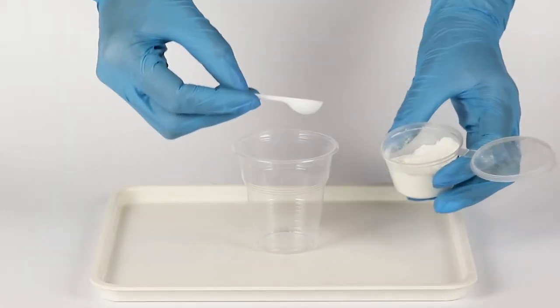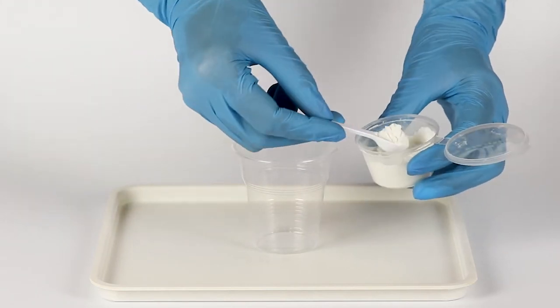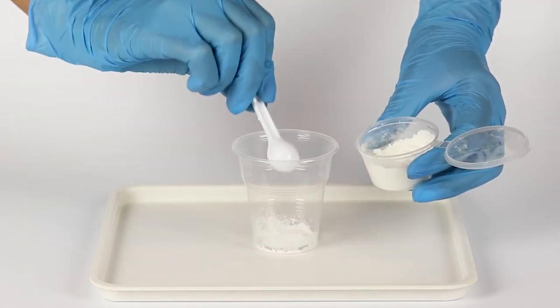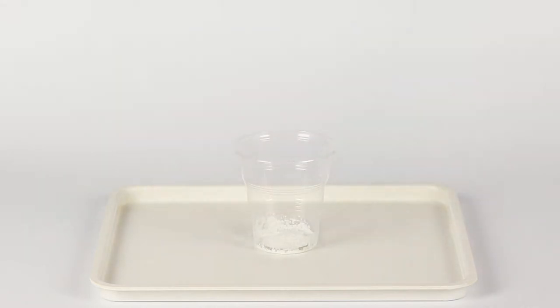First, prepare a starch solution. This will act as an iodine indicator. Measure one big spoonful of starch into a plastic cup.